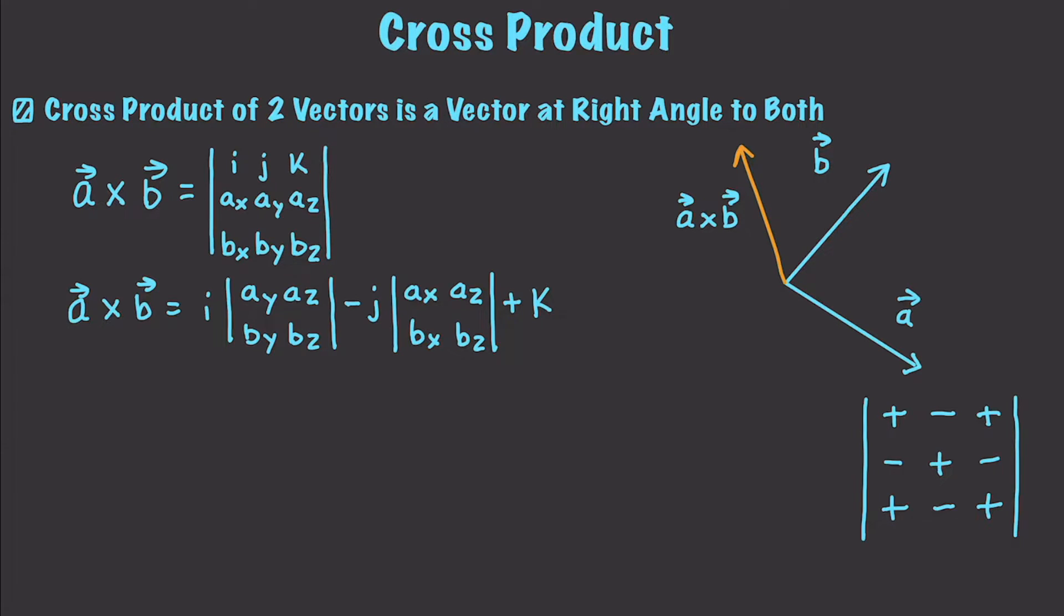Don't worry if this is in any way confusing. It will become very clear whenever I do an example. So, what are we going to have here? aX, aY, bX, bY.